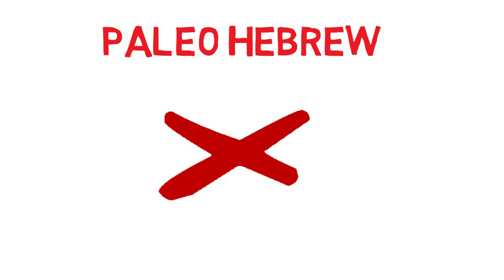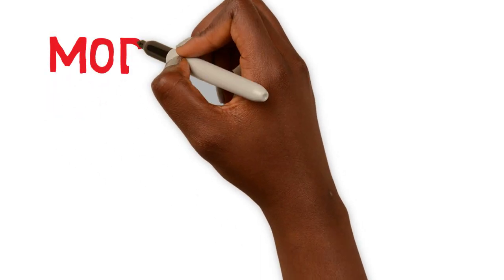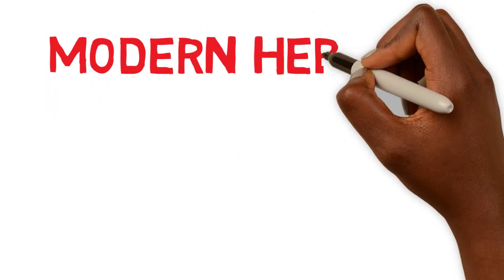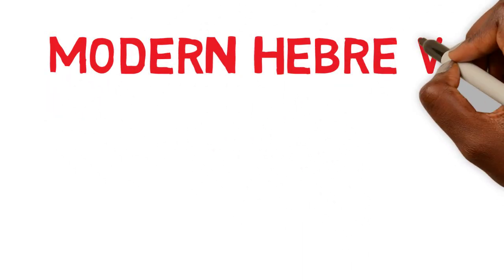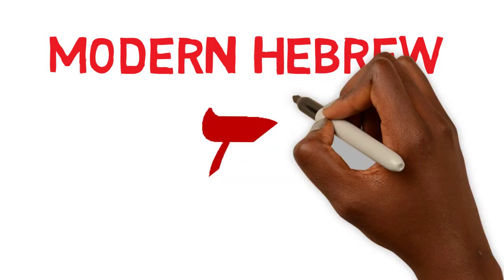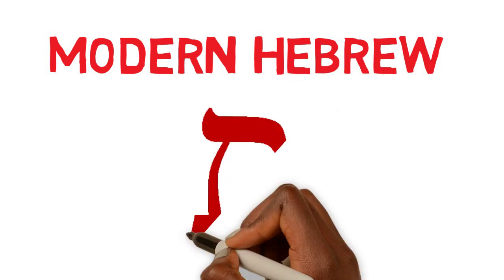Now we will take a look at the modern Hebrew — what Tau looks like today. This is the symbol for Tau in the modern Hebrew.